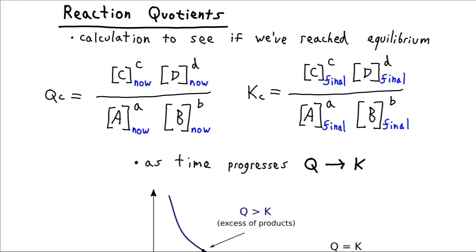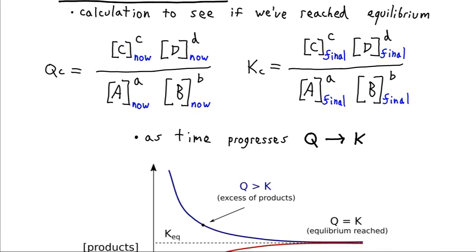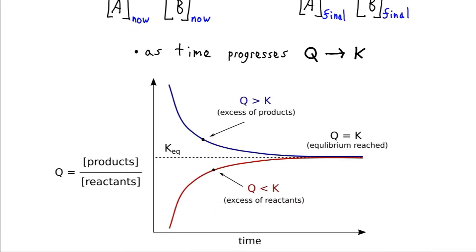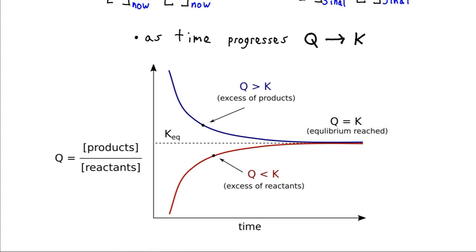Now we know as time progresses that eventually we're going to establish equilibrium. So whatever value Q is, it must gradually over time approach the value of K. So there are three possibilities. One possibility is that we might already be at equilibrium, in which case nothing will happen. That's the definition of equilibrium.